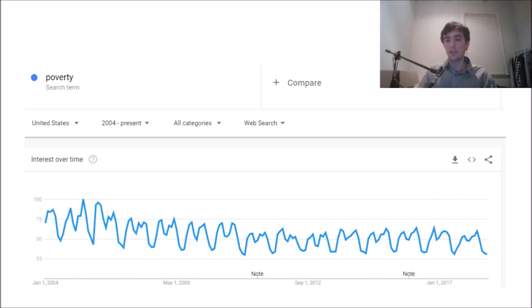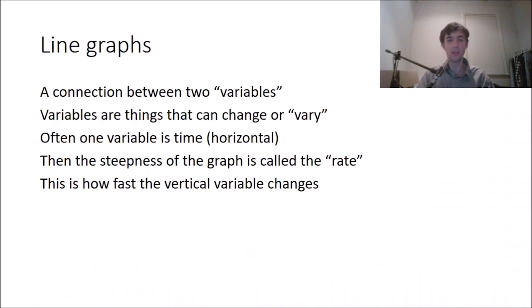Alright, here's another one. Line graphs are interesting because they reveal all these strange patterns. And here's one where it looks like every year there's a cycle in interest in the word poverty. And I wonder whether that's because of the seasons. In winter, maybe people are more concerned about poor people. I don't know. We can come up with a number of different theories to why this is. I haven't got to the bottom of it yet, but it's interesting.